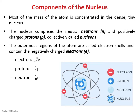The outermost region of the atom is called the electronic shell, which contains negatively charged electrons revolving around the positively charged nucleus. In the notation for these particles, you write the element abbreviation with the charge as a subscript and the mass as a superscript. Electrons have a charge of negative one and a mass of zero. Protons have a charge of plus one and a mass of one. Neutrons are neutral with a charge of zero and a mass of one.